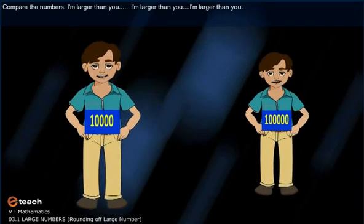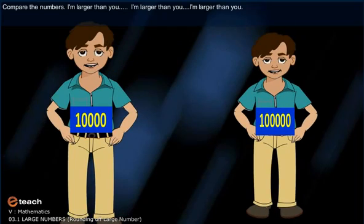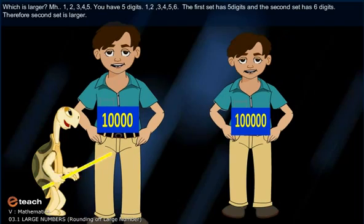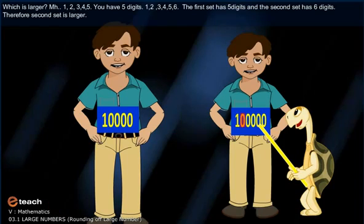Now, compare the numbers. Which is larger? The first number has five digits, and the second number has six digits. Therefore, the second number is larger. When comparing numbers, the number with more digits is always the larger one.